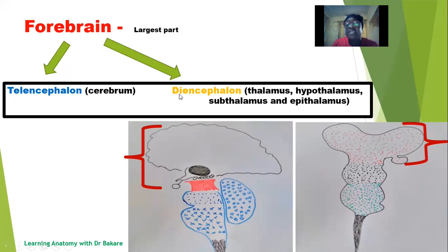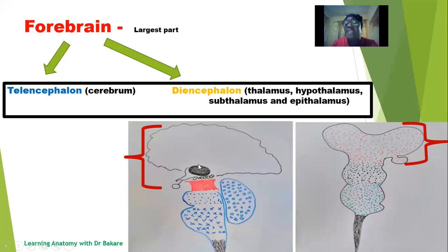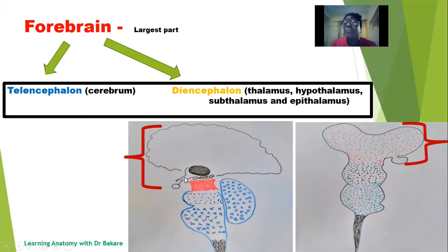The second region of the prosencephalon is the diencephalon, with structures located below the cerebrum hemisphere, including the thalamus. The thalamus acts as a relay station — like a bulb seen below the cerebrum hemisphere — where pathways intercept their neurons before they finally terminate on the cerebral cortex. Below the thalamus is the hypothalamus, which sits above the pituitary gland. The hypothalamus controls heartbeat, helps maintain the body's homeostatic condition, and has a tubular connection with the pituitary gland, helping to control its secretion.